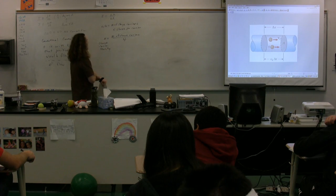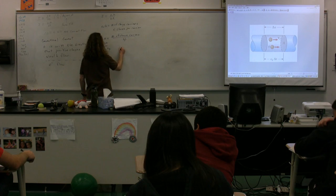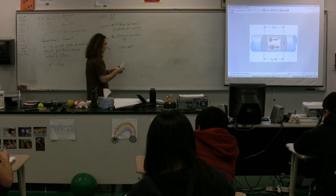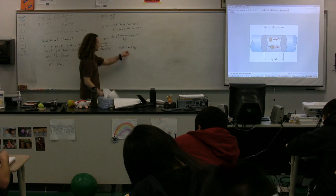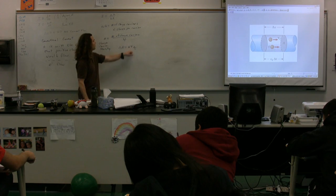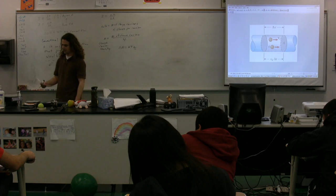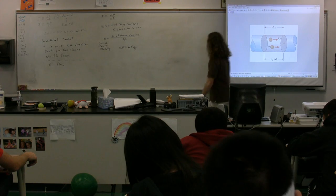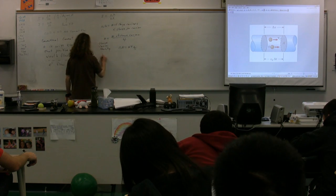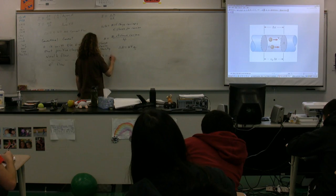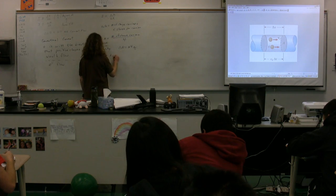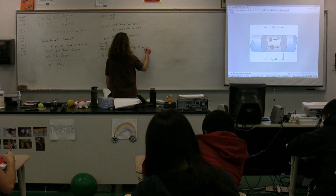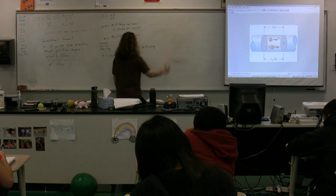The charge carrier density. It's the number of charge carriers per unit volume. In other words, the number of charge carriers is equal to N times V. So delta Q then is equal to N times V times the charge on each carrier, which is just Q. In other words, the charge carrier density multiplied by the volume multiplied by Q, the charge per carrier. Well, the volume of this section right here is the cross-sectional area multiplied by delta X.